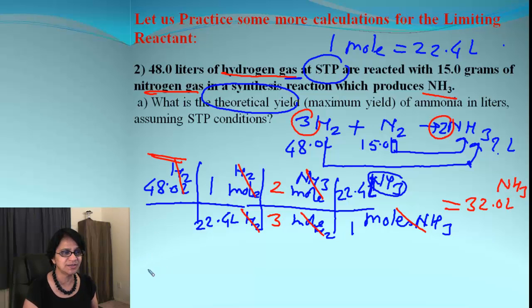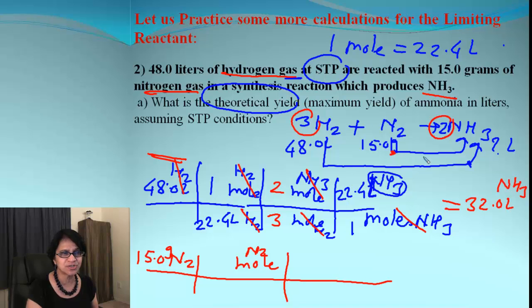Let's do the other one with nitrogen now. So the beginning point is nitrogen and that is 15.0 grams. Where do we go from grams? Of course we go to moles of nitrogen. From moles of nitrogen, we are going to go to moles of product which is moles of ammonia. And from moles of ammonia, we are going to go to liters of ammonia.